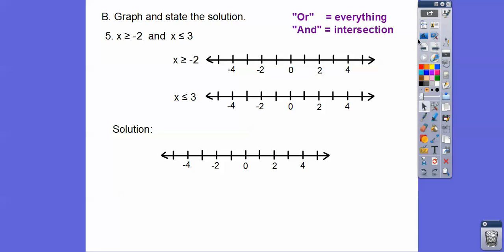This example has a closed circle on negative 2 shaded to the right, and a closed circle on positive 3 shaded to the left. This is an AND, so AND means intersection. They intersect in the middle region, giving the solution negative 2 less than or equal to x less than or equal to 3.